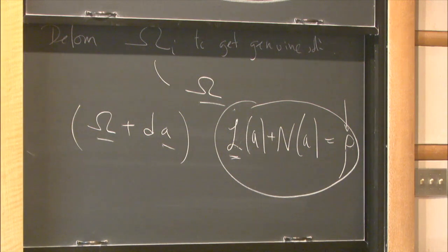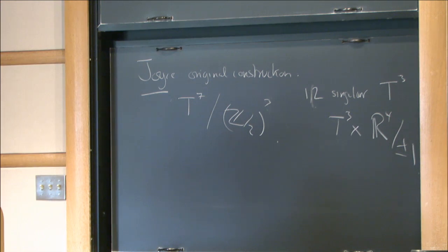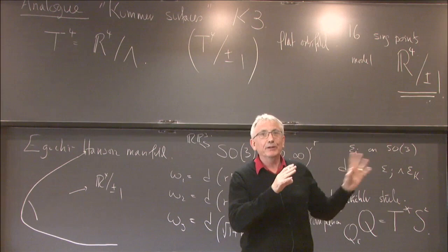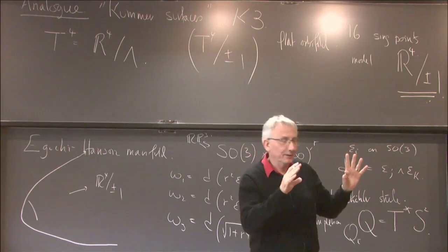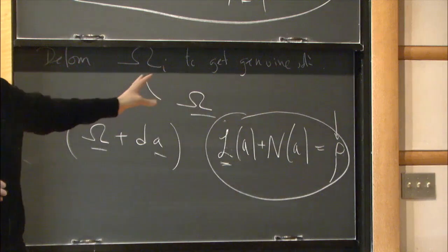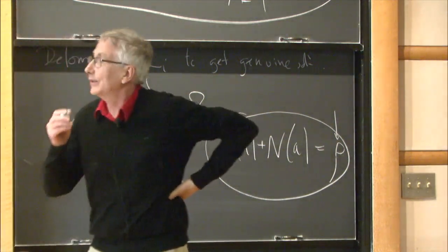We construct our approximate solution and then Joyce carries through a gluing analysis involving, as we said, the linearization — which will essentially be a Laplace operator on forms — and eventually proves that you can construct a manifold in this way. The invertibility essentially comes from Hodge theory, so it becomes topological — it's built in.